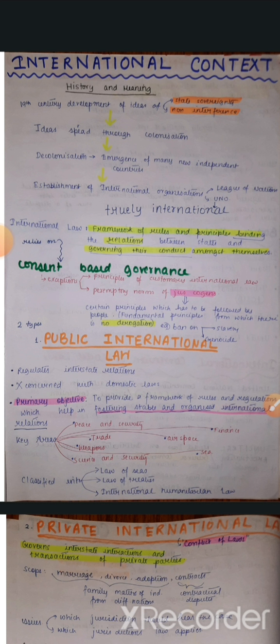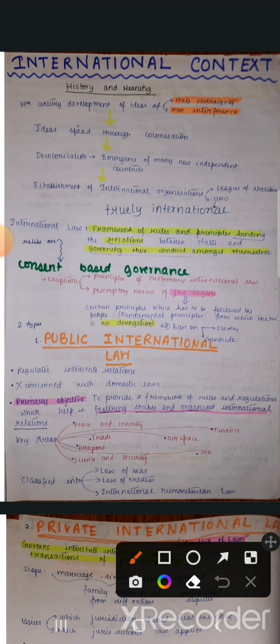And just cogens — ye aapki textbook mein kahi nahi hai, toh aap dhyan se ye samjhna. Just cogens means there are certain principles which have to be followed by people. These are fundamental principles from which there is no derogation — isse koi chhoot nahi ho sakti. Jaise ki ban on slavery and prohibition of genocide — ye kuch aise rules hain jo ki bahot hi zyada serious aur important hain.